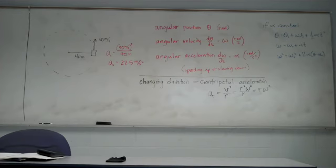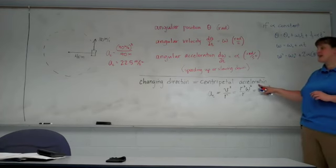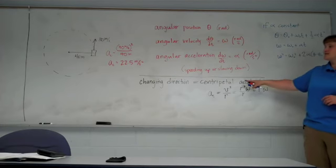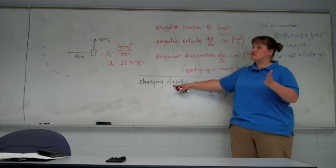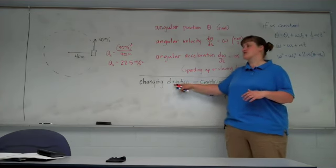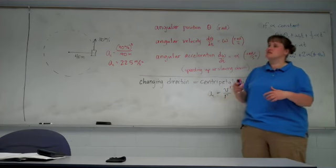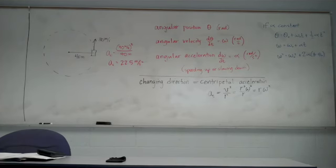The centripetal acceleration is in actual meters per second squared — not radians. It's responsible for making something change direction, moving in a circle or at least part of a circle. You don't have to complete the circle; as long as you're moving through a portion of the circle, you have a centripetal acceleration with units of meters per second squared.